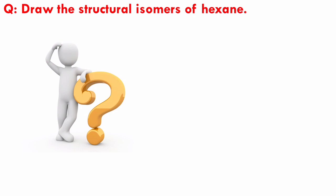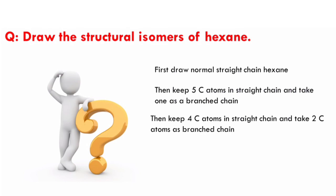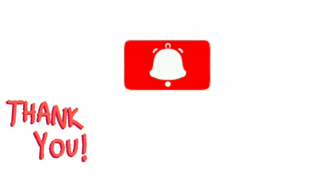Here is a homework for you: try to draw the isomers of hexane. Hexane has six carbon atoms. Hints: first draw normal straight-chain hexane; in the next structure take five carbon atoms in the straight chain and the sixth as a branch; in the third structure take four carbon atoms in the straight chain and two carbon atoms as branches; then repeat this method to find all structural isomers of hexane. Show your drawings to your science teacher. Thank you for watching — if you liked this video, hit the like button, share it, and subscribe for more Class 10 physics and chemistry videos.